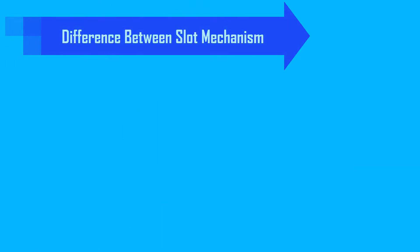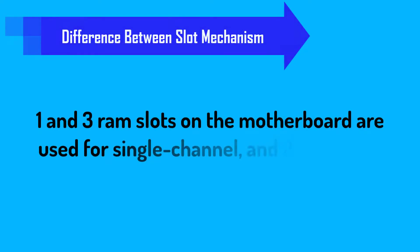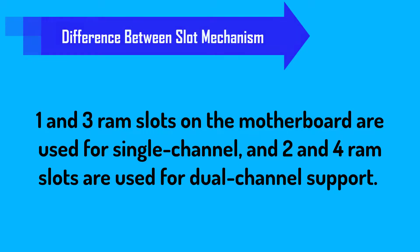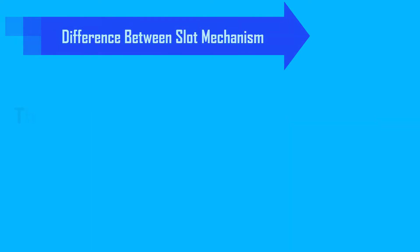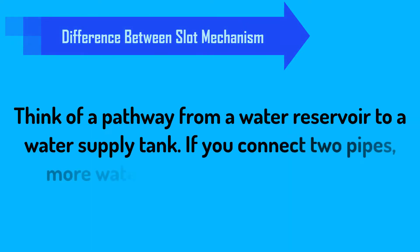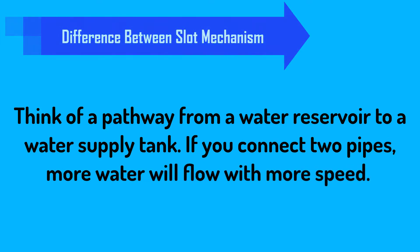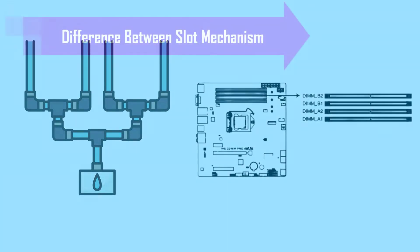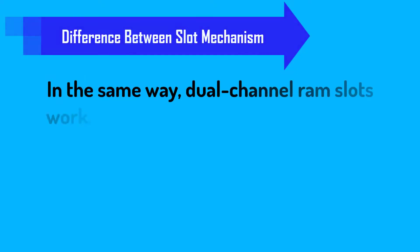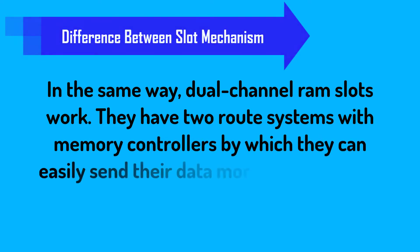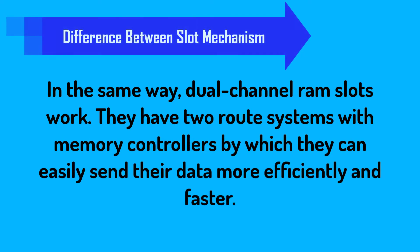Let's look at the difference between slot mechanisms. When you have 4 memory slots, the 1st and 3rd RAM slots on the motherboard are used for single channel, and the 2nd and 4th RAM slots are used for dual channel support. Think of a pathway from a water reservoir to a water supply tank — if you connect two pipes, more water will flow with more speed. In the same way, dual channel RAM slots work. They have two root systems with memory controllers, by which they can send data more efficiently and faster.